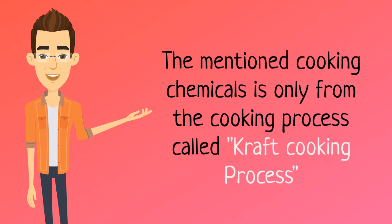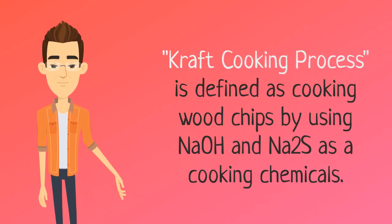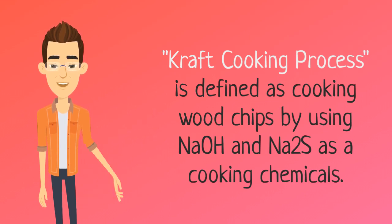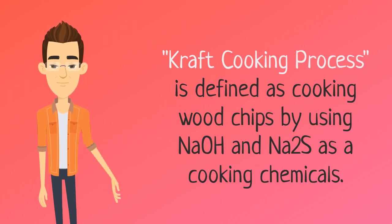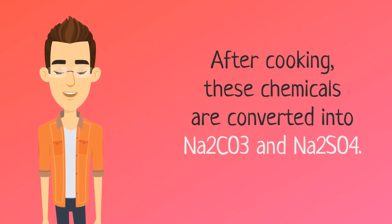The cooking chemicals discussed here are only from the cooking process called the kraft cooking process. The kraft cooking process is defined as cooking wood chips using sodium hydroxide and sodium sulfide as cooking chemicals. After cooking, these chemicals are converted into sodium carbonate and sodium sulfate.